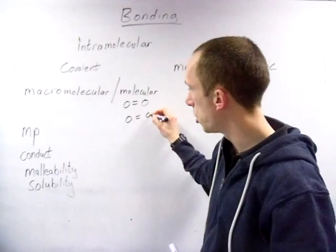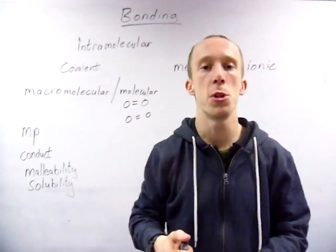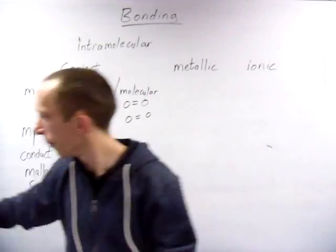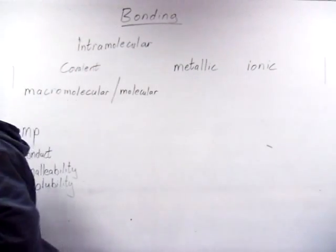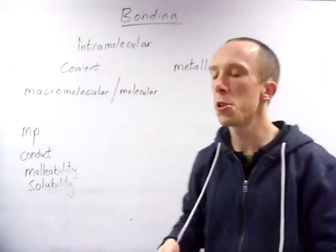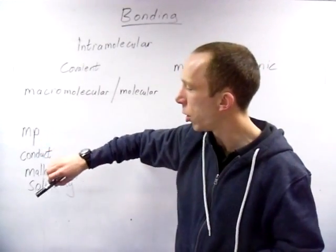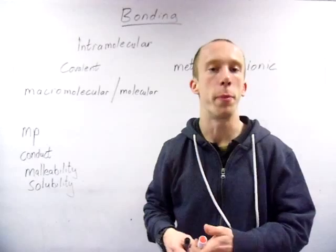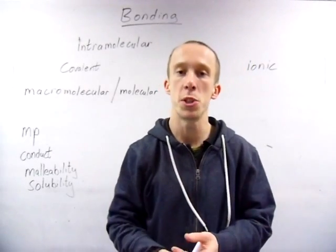So in oxygen you've just got the oxygen double bonded to each other. You've got other oxygens floating about, but there is no intramolecular bonds between them. There is just the weak intermolecular which we'll come on to. Now for describing the properties of them, there's four main properties which you should be aware of: melting point, conductivity, malleability, and solubility.